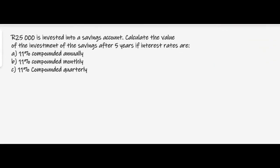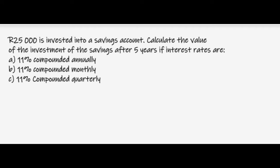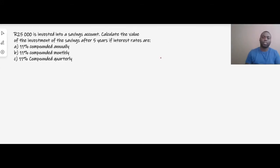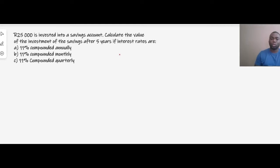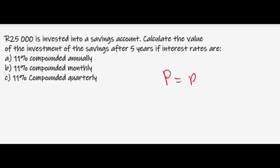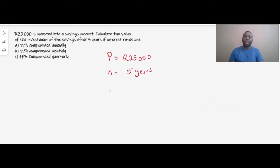Let us try an example of compound interest. The question says 25,000 is invested into a savings account. Calculate the value of the investment after five years if the interest rate is 11% compounded annually, 11% compounded monthly, and 11% compounded quarterly. The first thing we do is write out what we're given: our principal P equals 25,000, and our n, which is the number of years, is five.